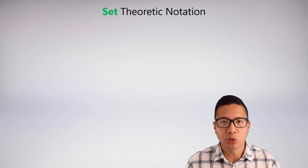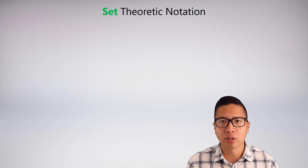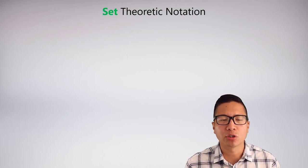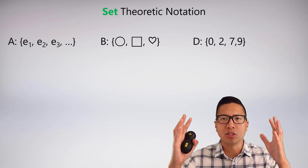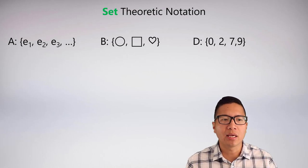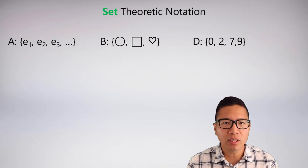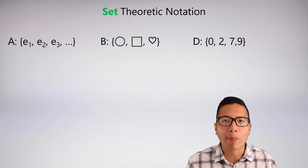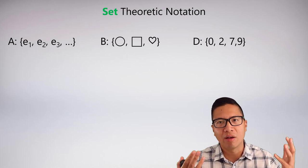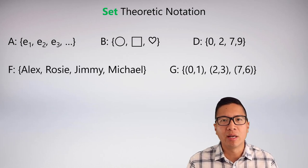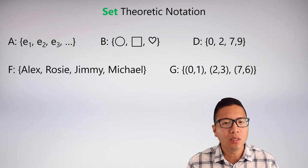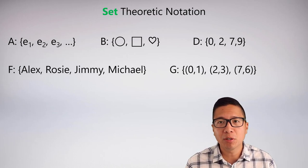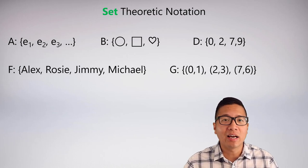This problem of unclear truth values isn't unique to intentional interpretations, but it's probably worst there. So now we're going to move to extensional interpretations. But first we need to brush up on set theoretic notation, which is a way to describe collections of things. Here I have set A containing e1, e2, e3. Set B has a circle, a square, and a heart. Set D has the numbers 0, 2, 7, 9.